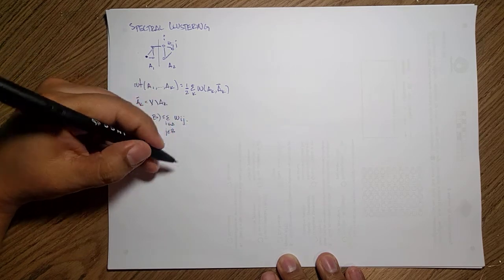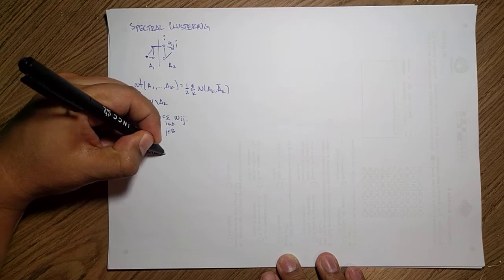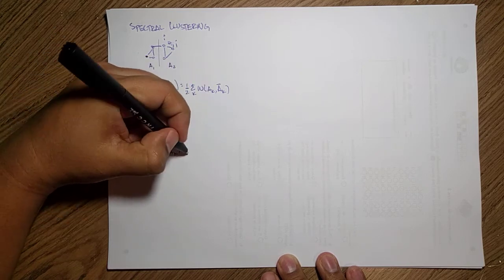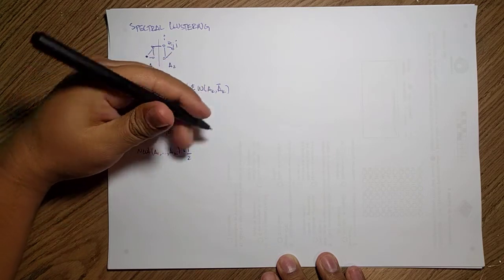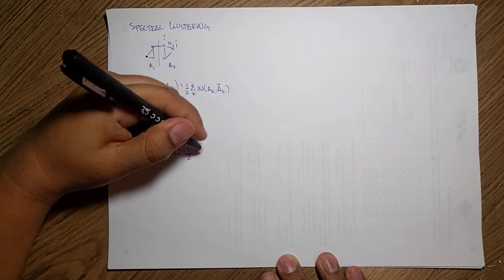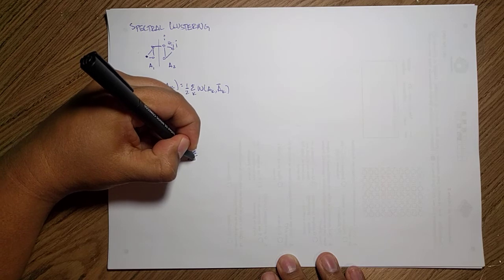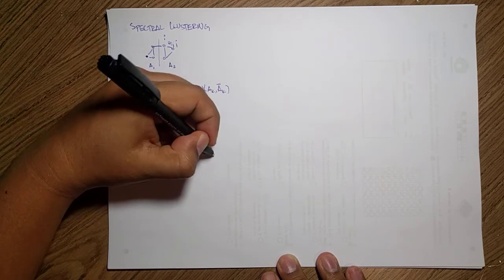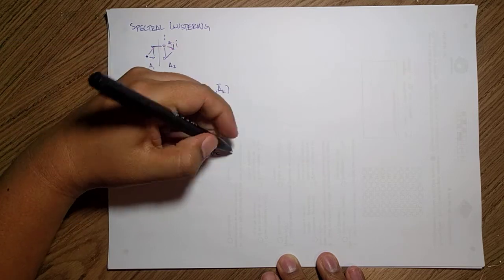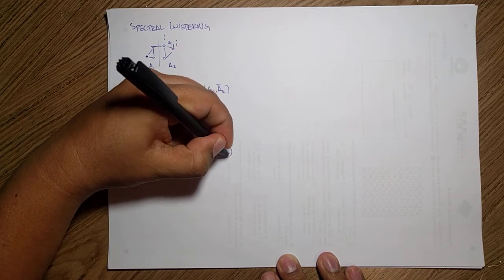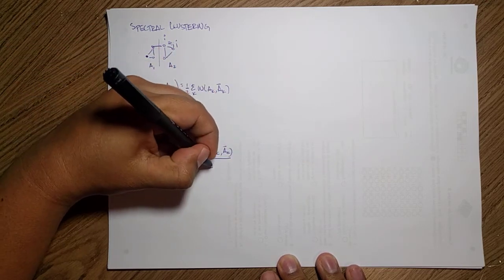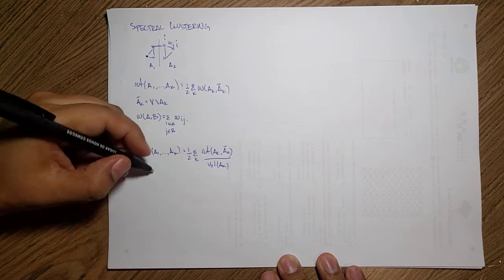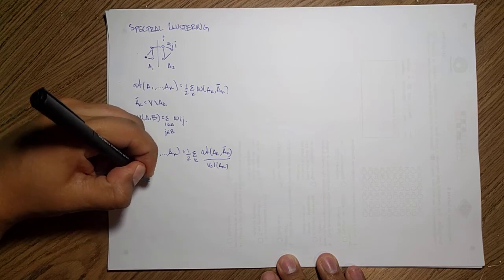A normalizing cut from a partition is just taking the cut and dividing it by the whole volume or the whole amount of edges that I have. So I can take my cut between the Ak partition and its complement and then divide it by the volume of that node.